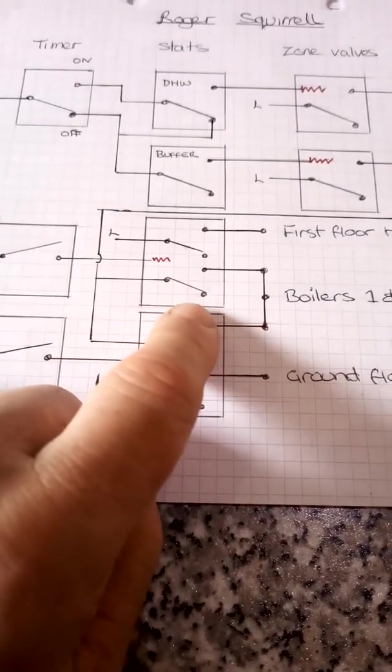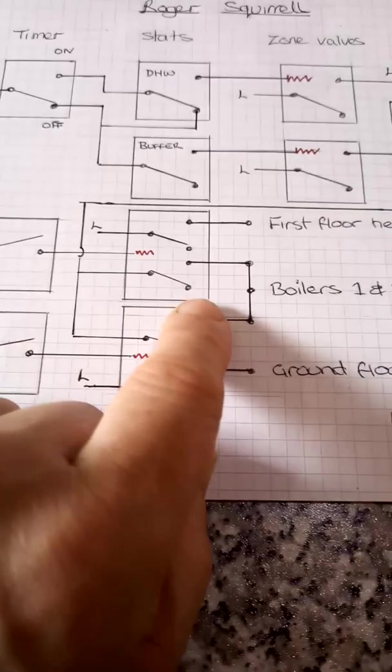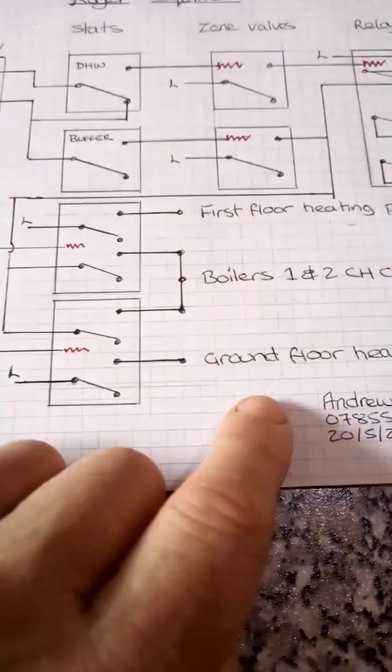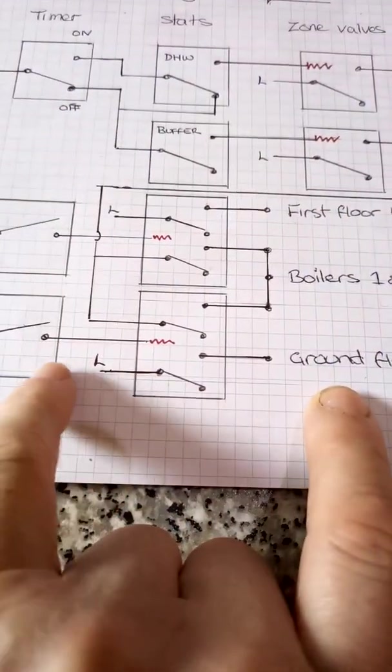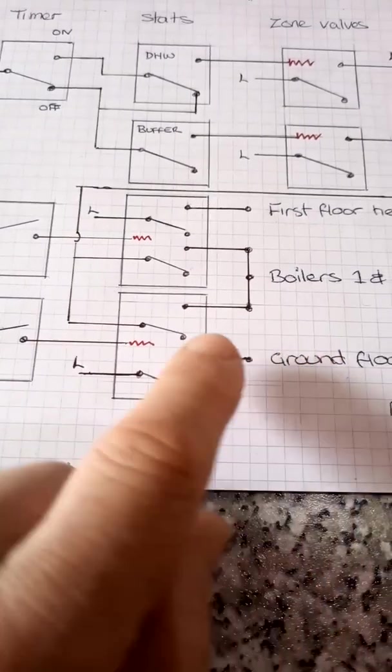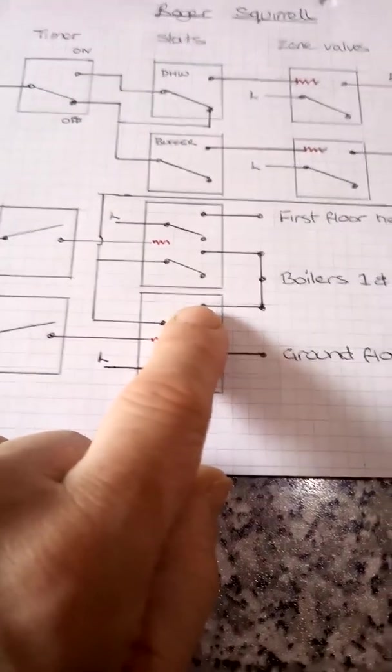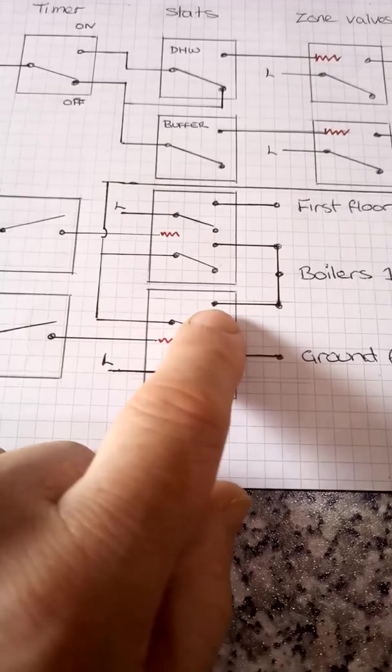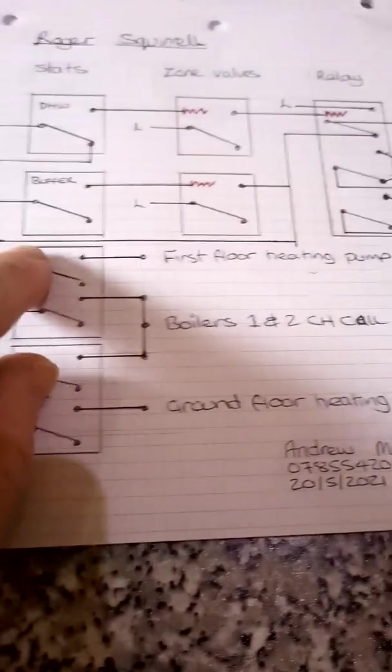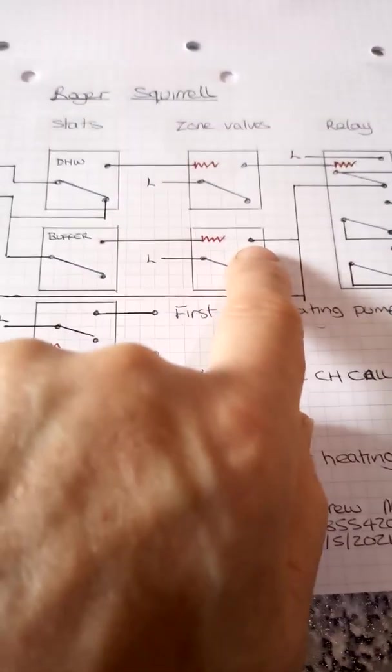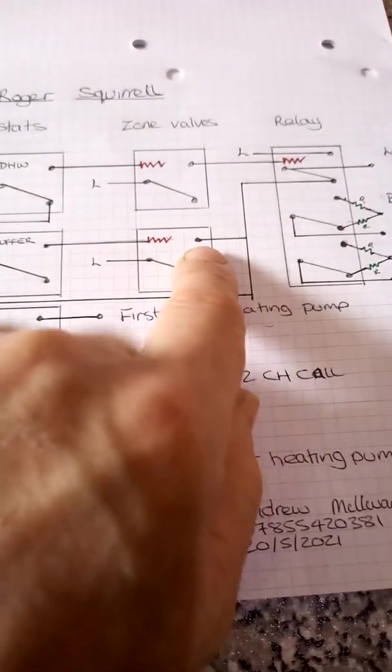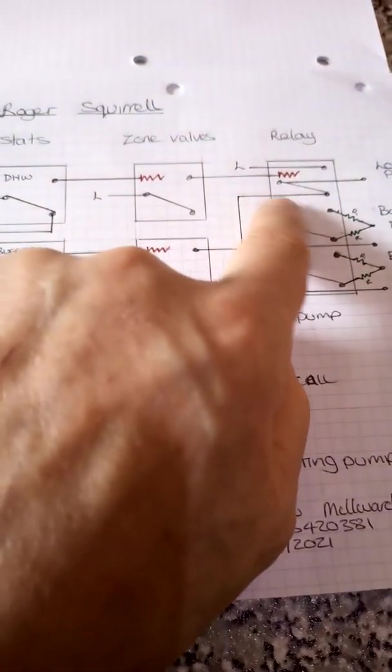So if they're on, they will always turn on the first floor heating pump, ground floor heating pump, depending on which one's calling. But what they'll also do is latch across to the boilers one and two central heating demand. But that will only call if we've either got a call from buffer cylinder stat, or we've got a call, sorry, so if we've got a call from the buffer stat.